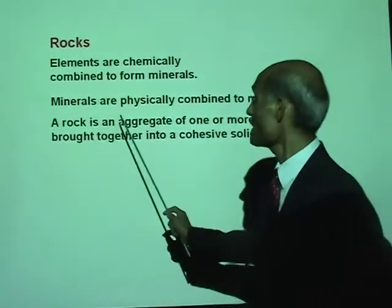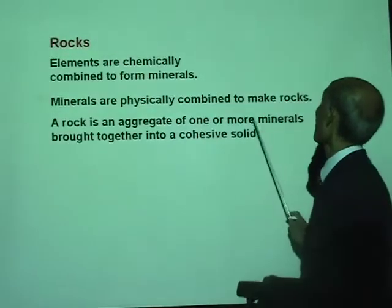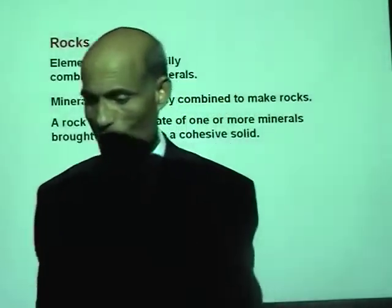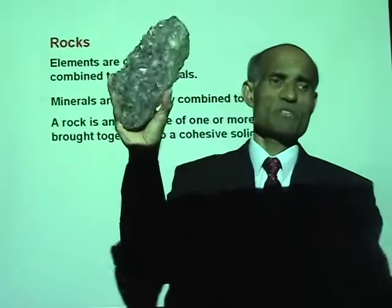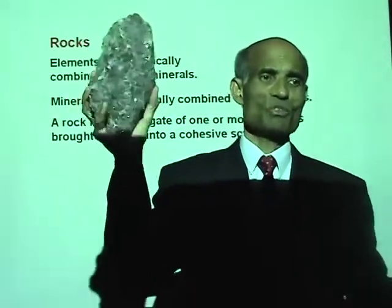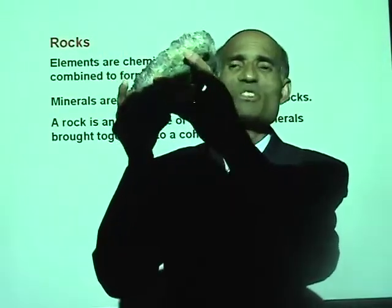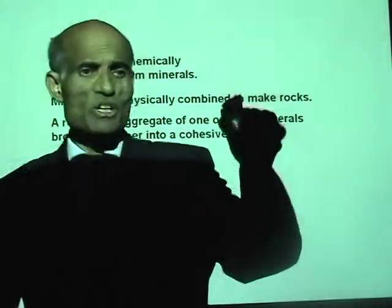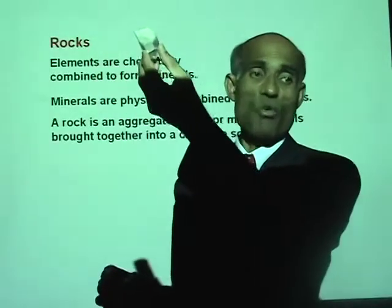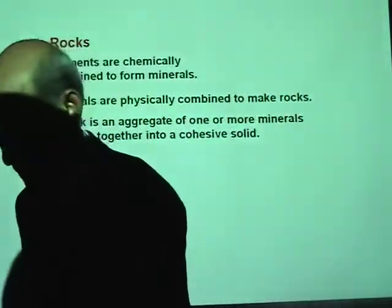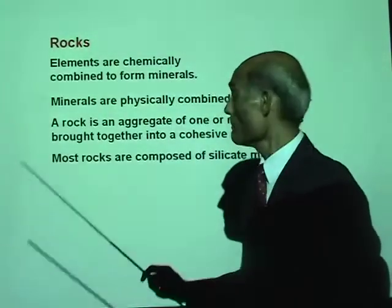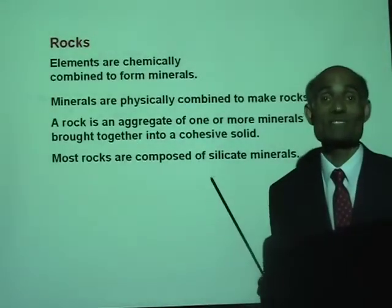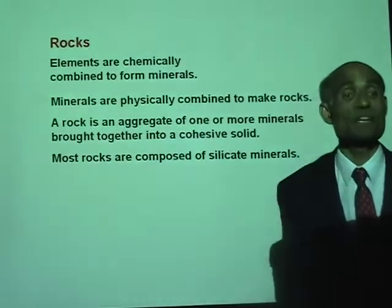Elements chemically combine to form minerals, and minerals physically combine to form rocks. Most of the rocks you see around are combinations of many minerals which can be physically separated. A rock is an aggregate of one or more minerals brought together into a cohesive solid. Most rocks are composed of silicate minerals — very understandable because silicates make up about 90% of the Earth's crust.